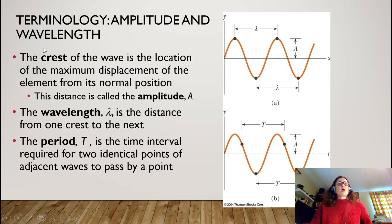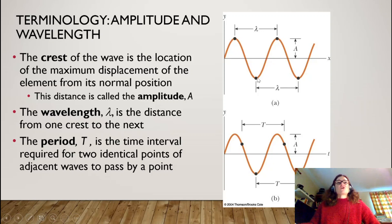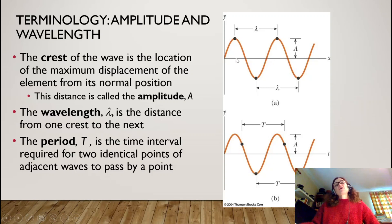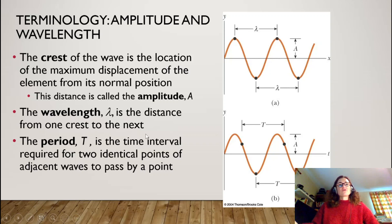Now for some nomenclature. The tops of the waves are called the crests — that's where you have the maximum displacement in the vertical direction. The bottom of the wave is called the trough. The distance between neighboring crests is the wavelength, which we symbolize with the Greek letter lambda. The displacement from the equilibrium point to the crest is the amplitude of the wave, referred to as A. The period, symbolized by T, is the time interval required for two identical points of adjacent waves to pass by a fixed point.